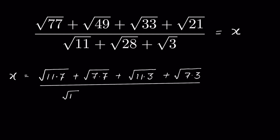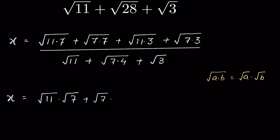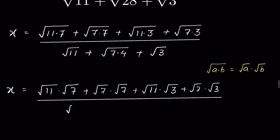The denominator has √11, plus √28 written as √(7×4), plus √3. Now using the rule that √(a×b) = √a × √b, we rewrite the numerator as √11·√7 + √7·√7 + √11·√3 + √7·√3, upon √11 + √7·√4 + √3.